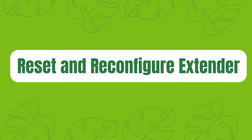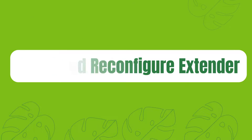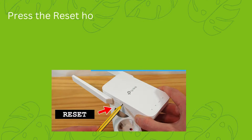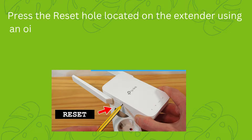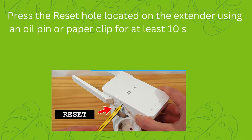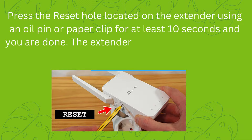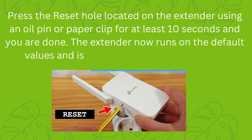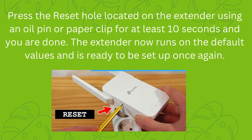Reset and Reconfigure Extender. Press the reset hole located on the extender using a pin or paper clip for at least 10 seconds and you are done. The extender now runs on the default values and is ready to be set up once again.